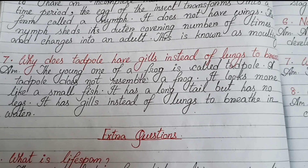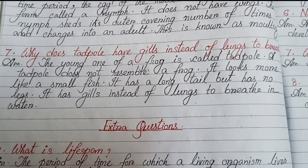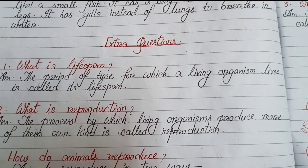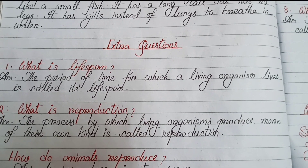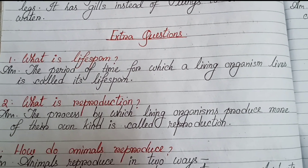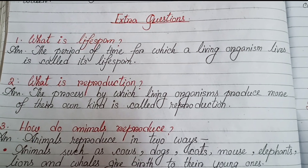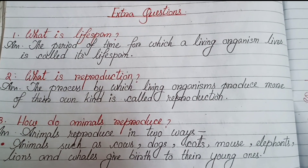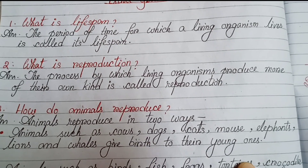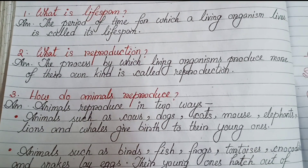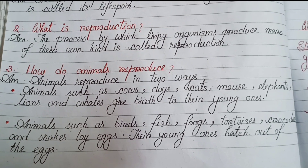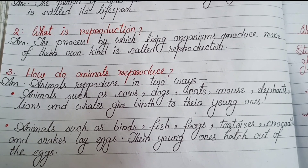Now we will solve the inside question answers. Question one: What is lifespan? The period of time for which a living organism lives is called its lifespan. Question two: What is reproduction? The process by which living organisms produce more of their own kind is called reproduction.